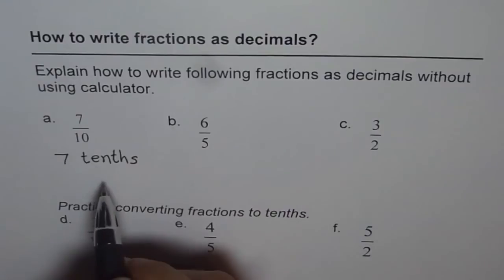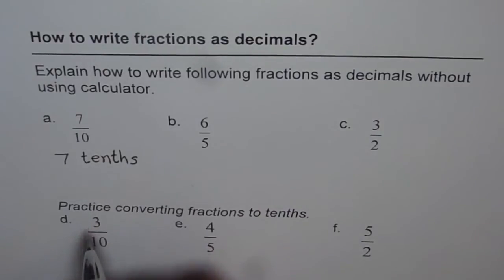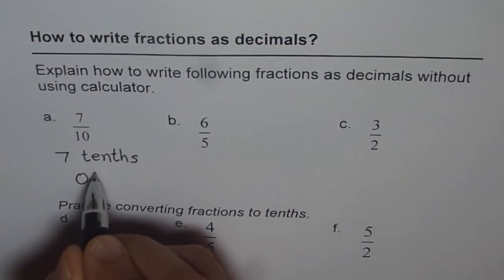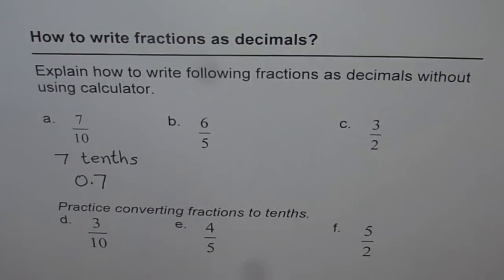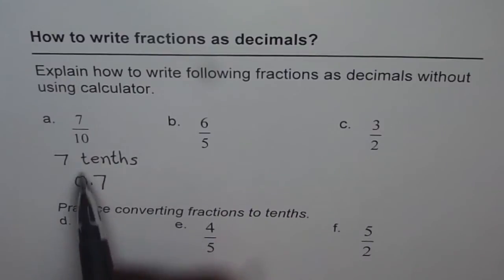Correct? And therefore, you can write this as decimal 0.7, that is 7 tenths. So that is how you write fractions to decimals.